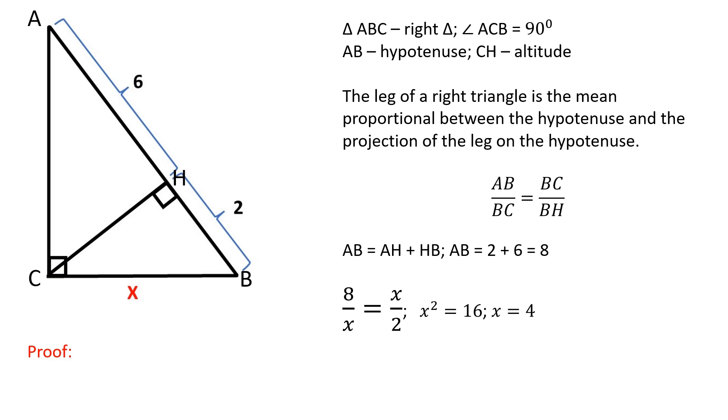Let's prove this theorem. Triangles ABC and CHB are similar because two pairs of corresponding angles are equal. Angles ACB and CHB are both equal to 90 degrees. Angle ABC is shared by both triangles.